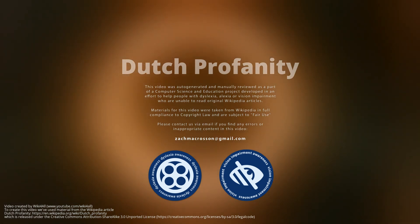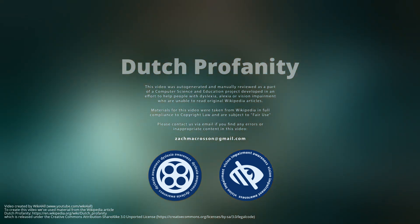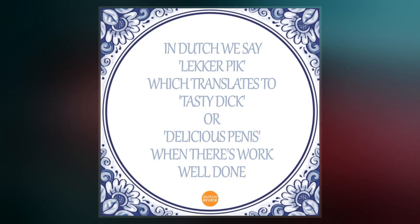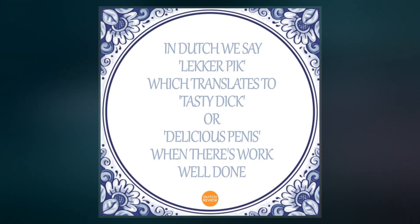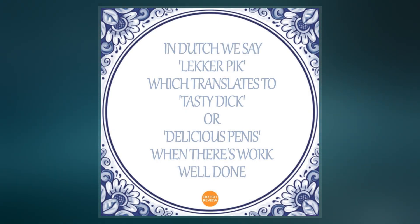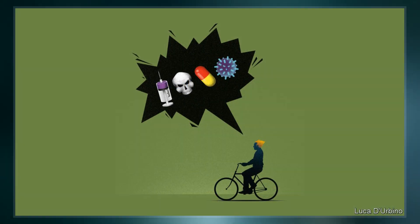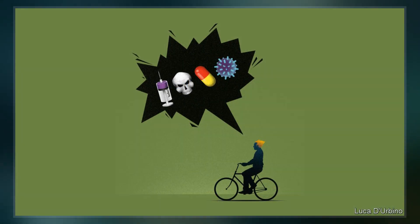Dutch profanity can be divided into several categories. Often, the words used in profanity by speakers of Dutch are based around various names for diseases. In many cases, these words have evolved into slang, and many euphemisms for diseases are in common use.